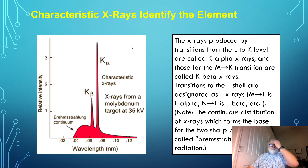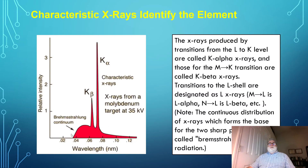Here is the X-ray spectrum from molybdenum. With 35 keV electrons incident on the target, the K-alpha lines blend together, and the K-beta line is also visible. The continuous background at lower energies comes from a different source called Bremsstrahlung, which we'll discuss in the next lecture. The wavelengths in the spectrum are reported in nanometers.